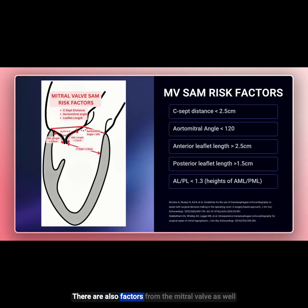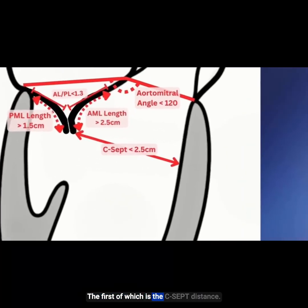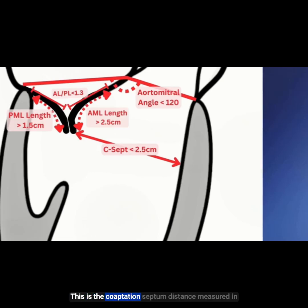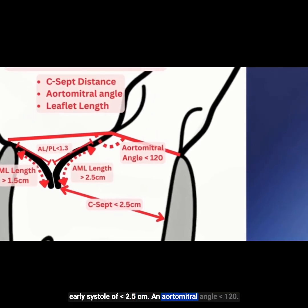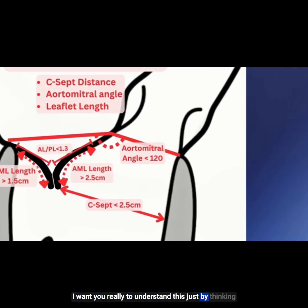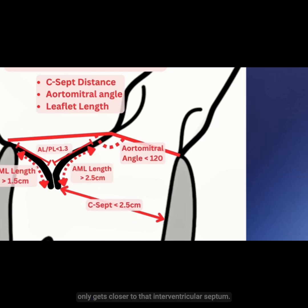There are also factors from the mitral valve that contribute to SAM after mitral valve repair. The first is the C-sept distance — the coaptation septum distance measured in early systole of less than 2.5 centimeters. An aortomitral angle less than 120 degrees — understand this by thinking about it rather than memorizing it, because as you lower that angle, the mitral valve anterior leaflet only gets closer to that interventricular septum.